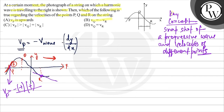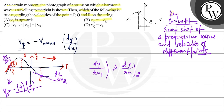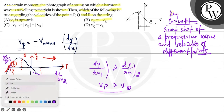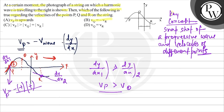For vR, looking at the slope: if we write dy/dx at point 1 and dy/dx at point 2, dy/dx of point 1 is greater than dy/dx of point 2. The velocity will be constant accordingly. So from here, the velocity of point P is more than the velocity of point Q. That is clear, and option B is incorrect.